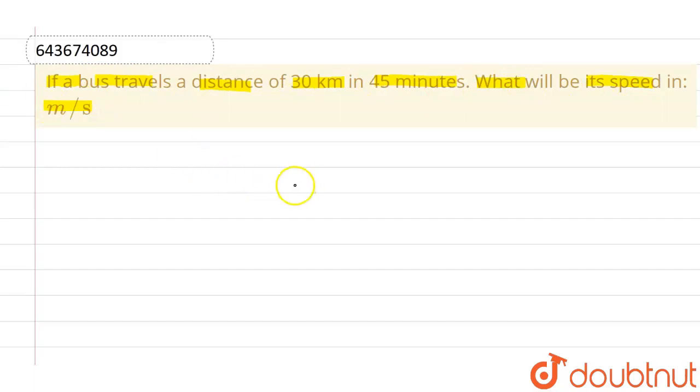So what we are given? We are given with the distance and distance is given as 30 km. And we know that in 1 km, there are 1000 meters. So this can be written as 30,000 meters.